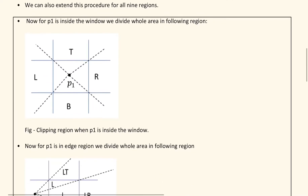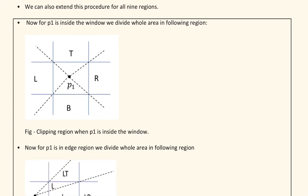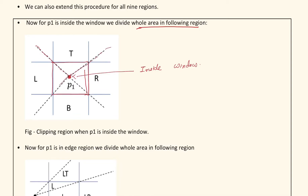We can extend this procedure for all line regions. When P1 is inside the window, we divide the whole area into the following regions. Suppose this point P1 is inside the window. It will be divided into four parts corresponding to four corners: top-left, top-right, bottom-left, and bottom-right.